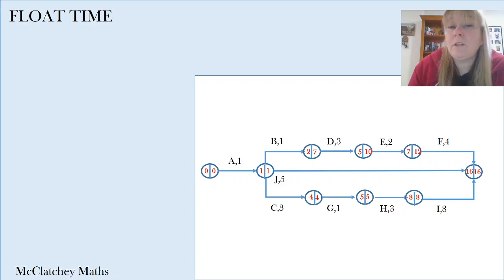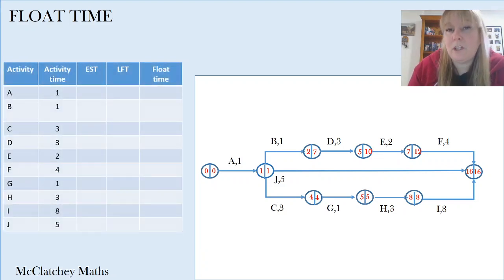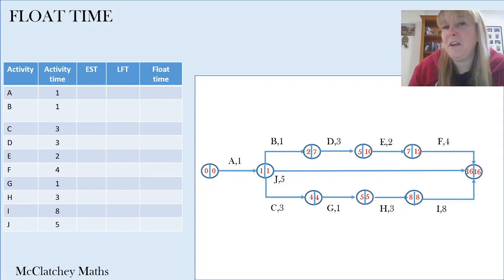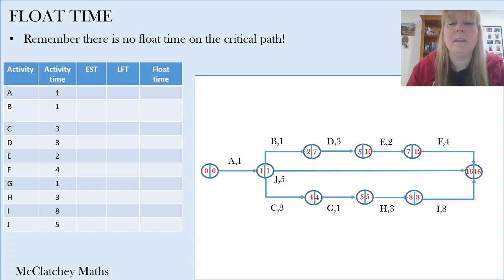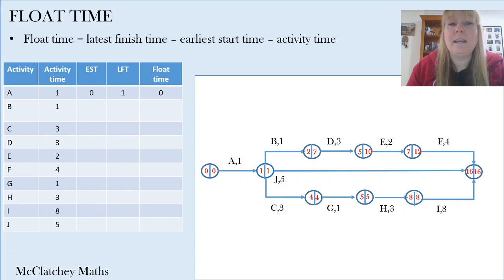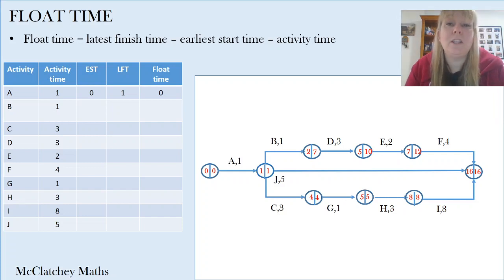We can also use the diagram to calculate float times. It's a good idea to set this information up in a table if you're asked to find float times for all the different activities. The formula is: float time equals the latest finish time, take away the earliest start time, take away the activity time. Note this is not on your QCAA formula sheet, so you do need to memorize this formula. Remember, there's no float time on our critical path — we've got no room to wiggle.